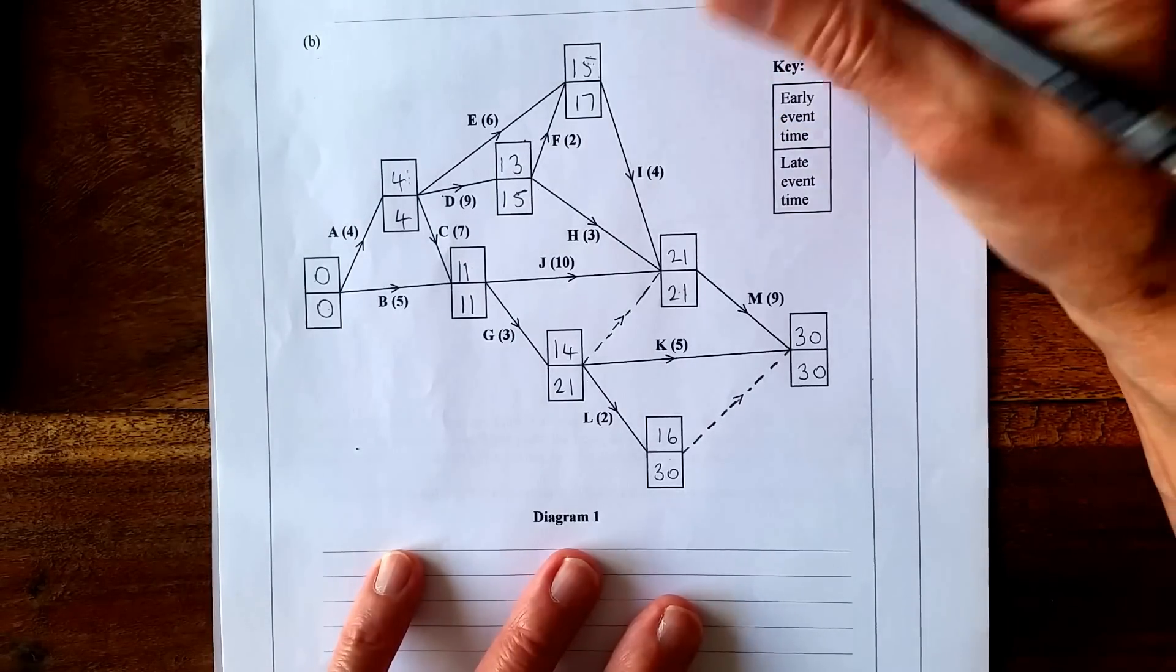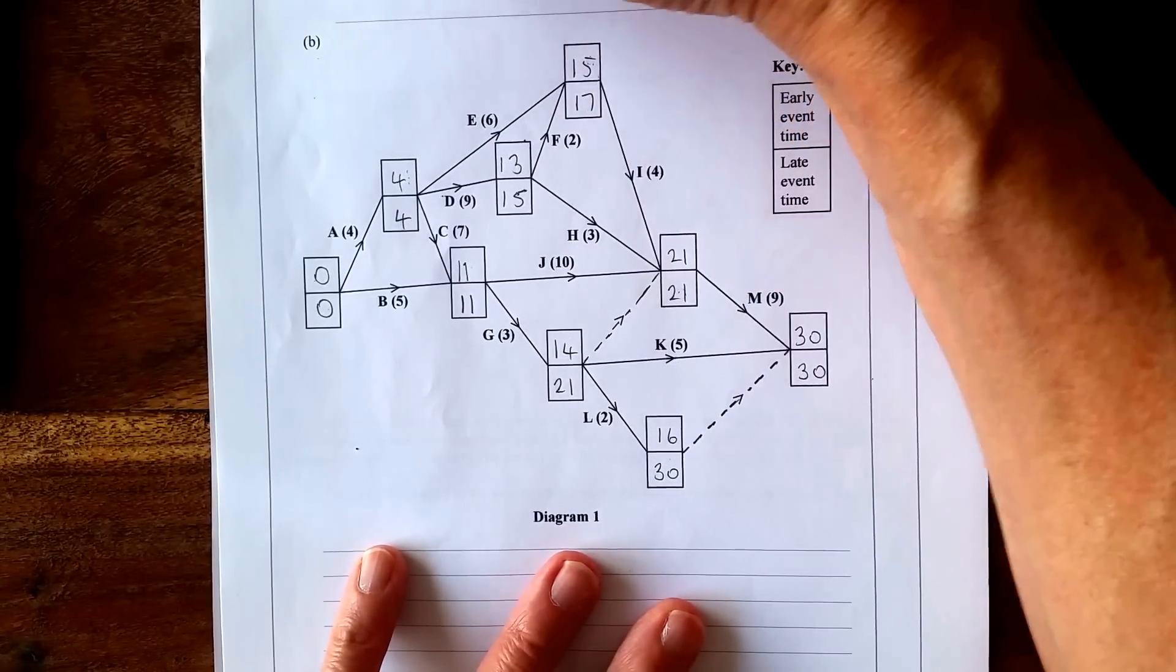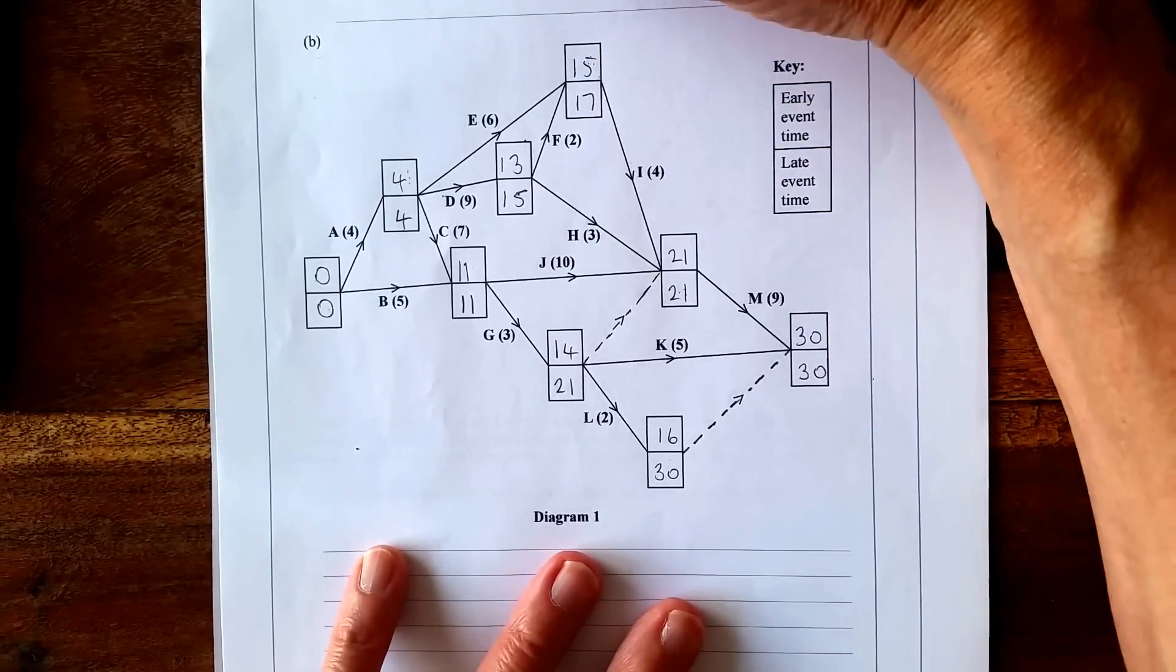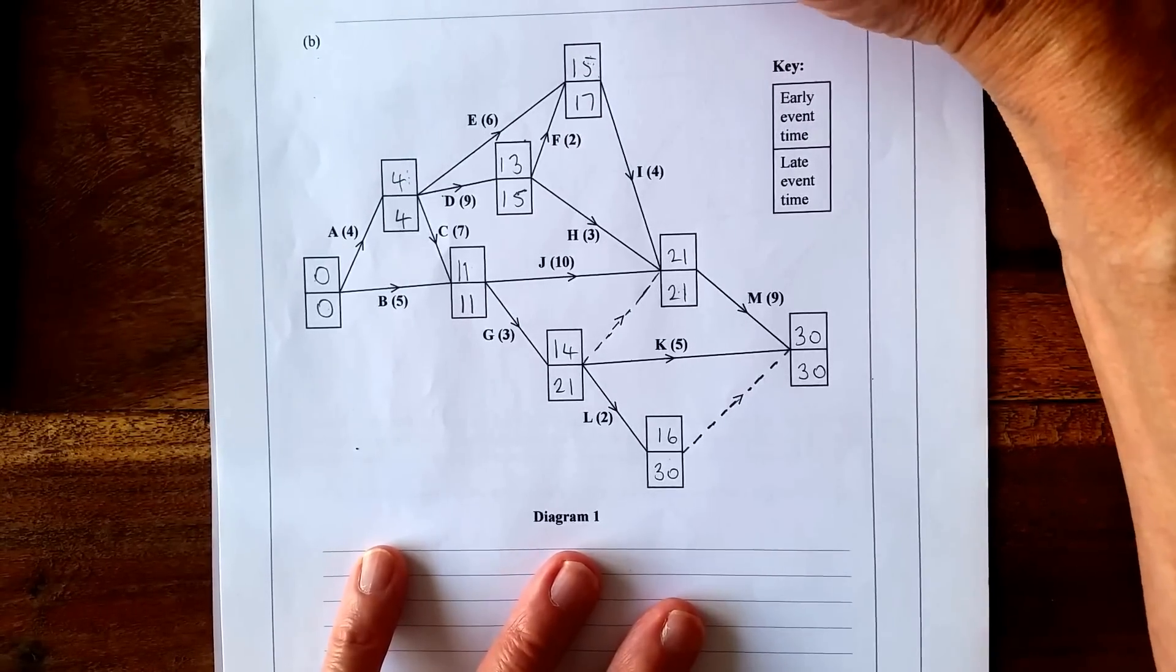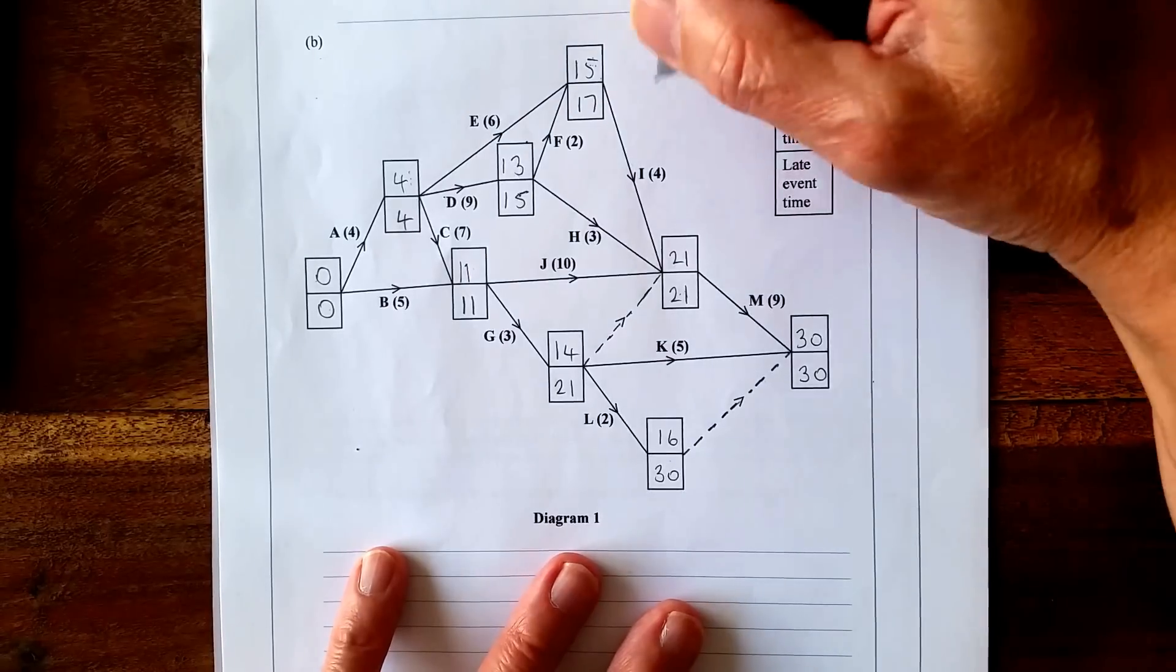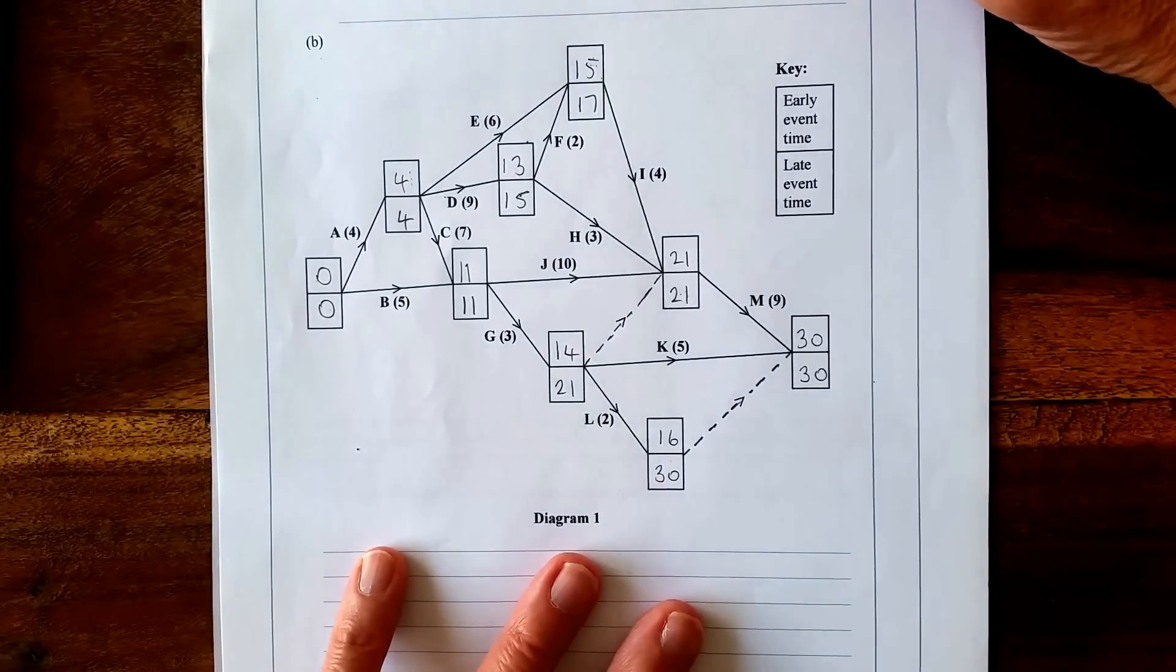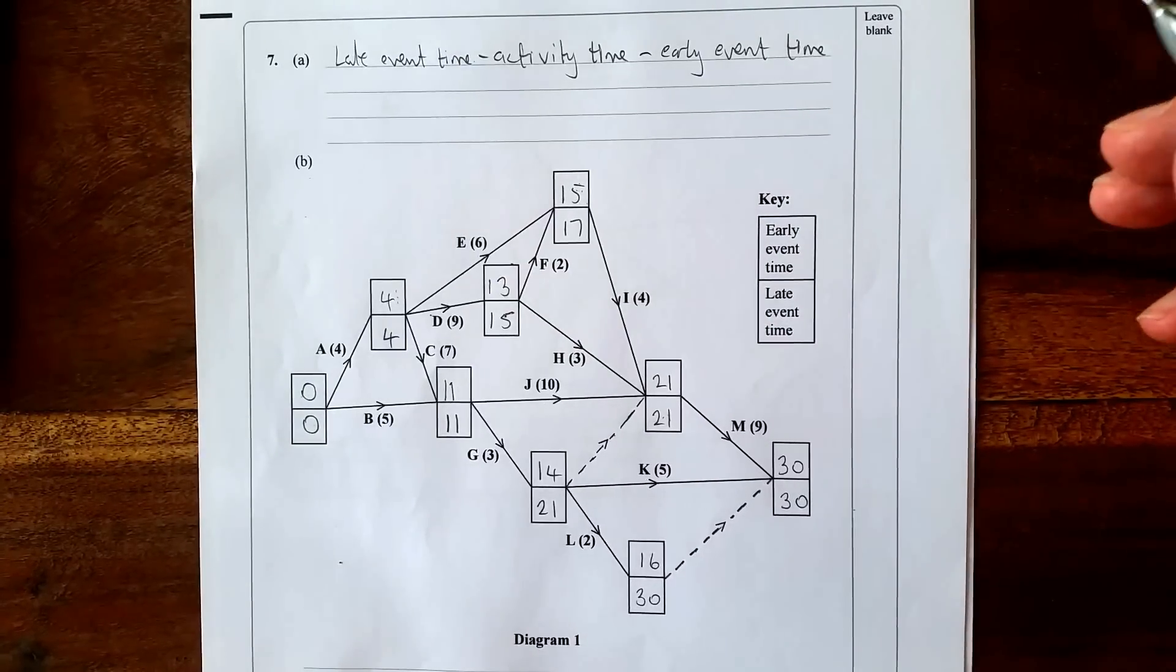But in general terms, it is late event time minus the activity time minus the early event time. And that's part A and B done.